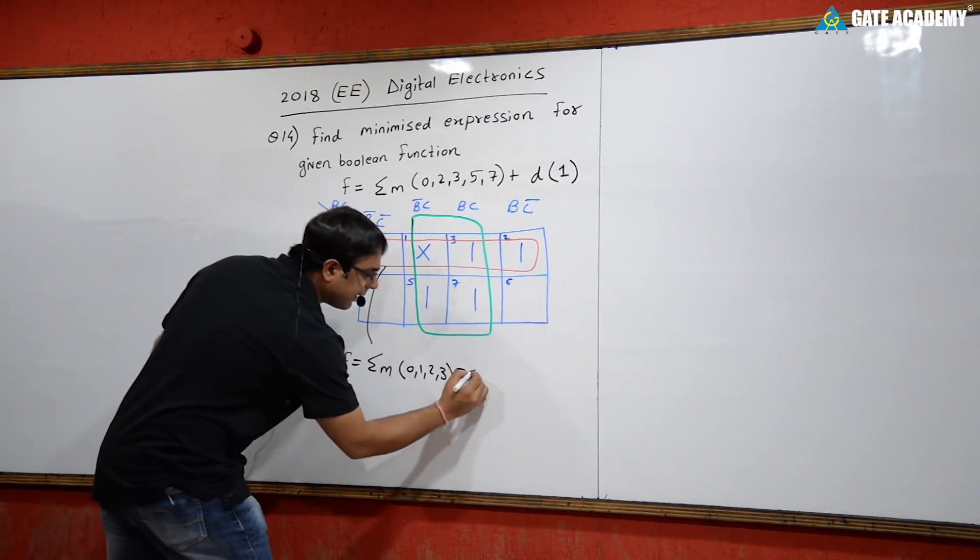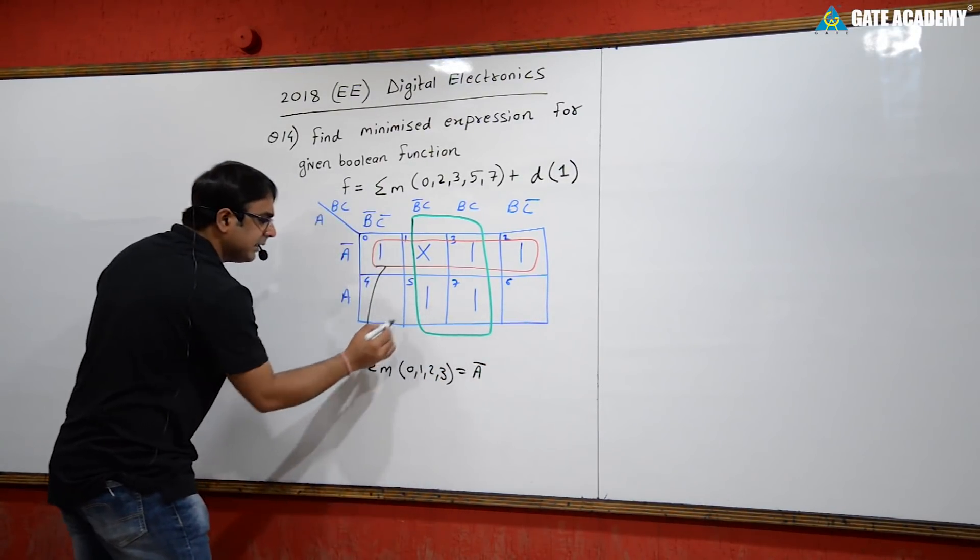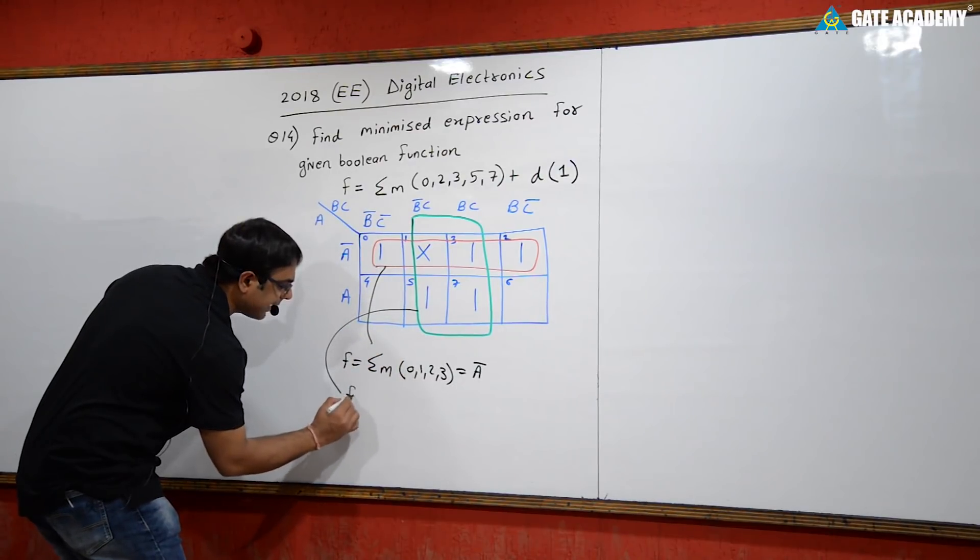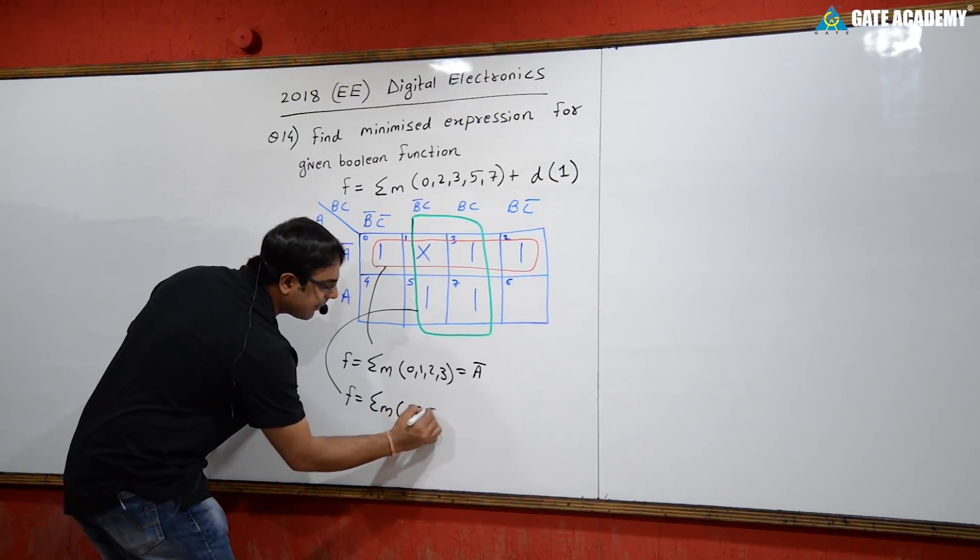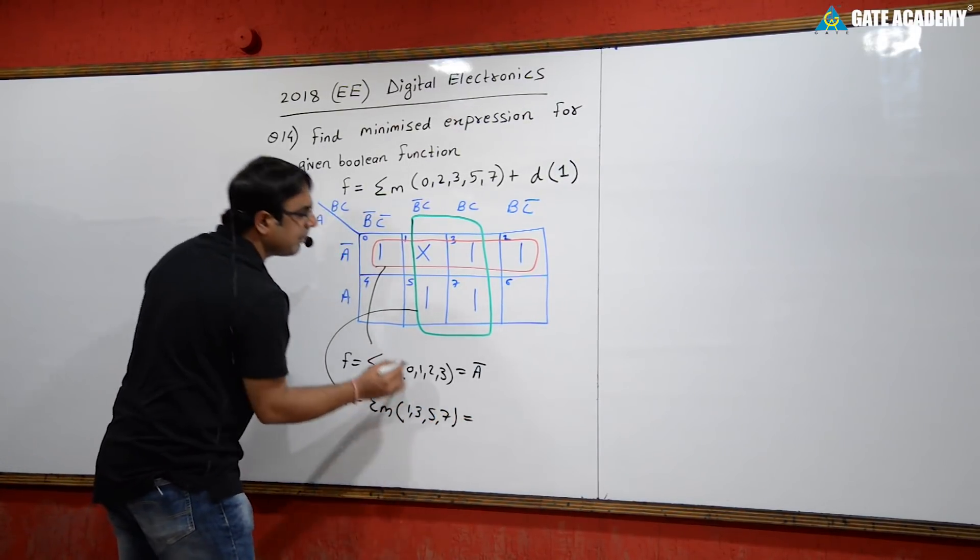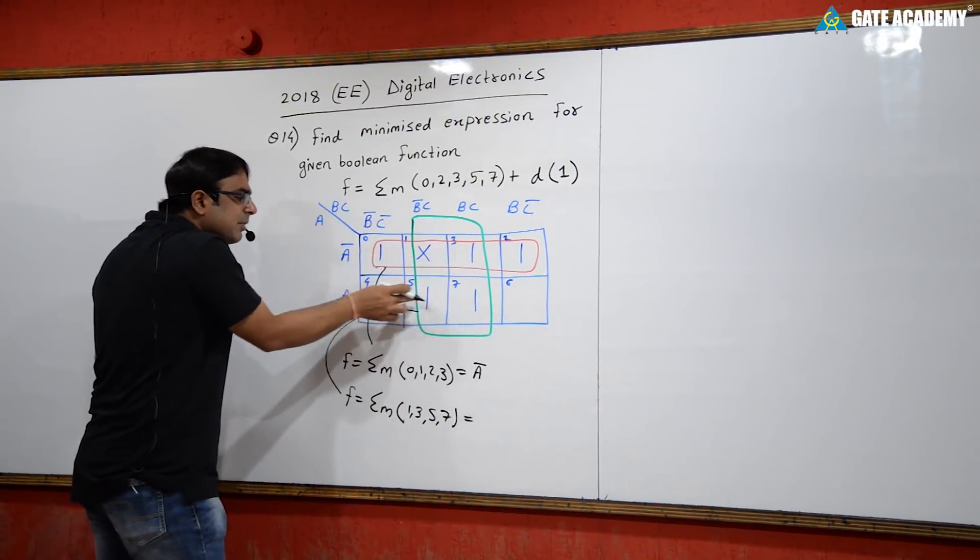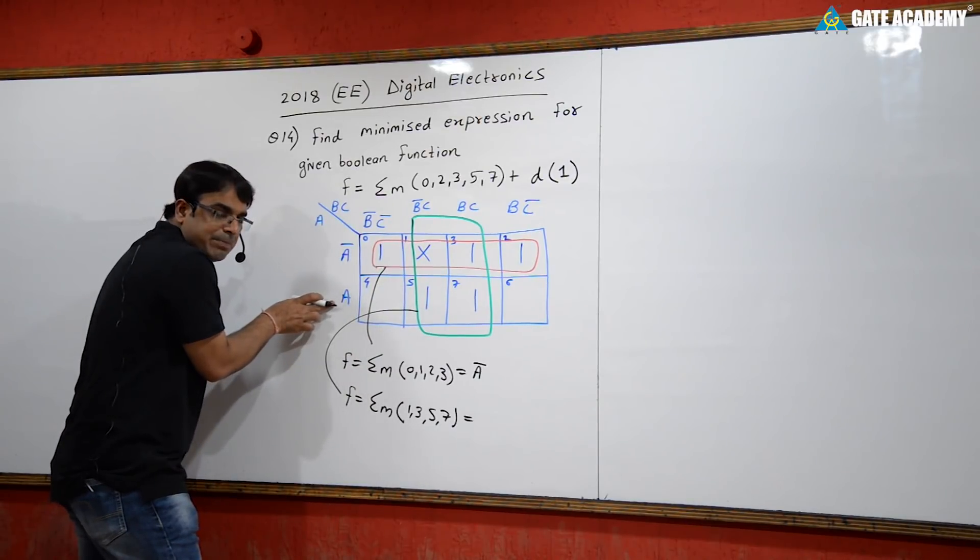This gives us a complement. Similarly, the second quad covers minterms 1, 3, 5, 7. You can see a changes, so a is minimized here.